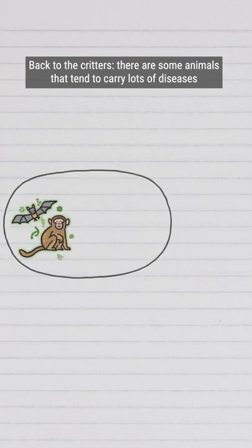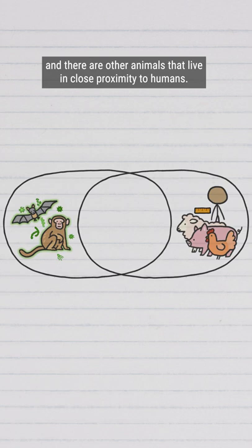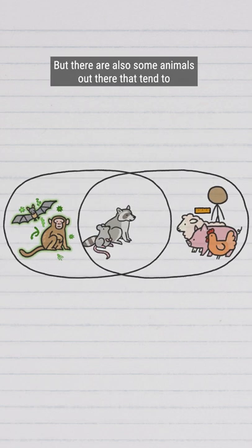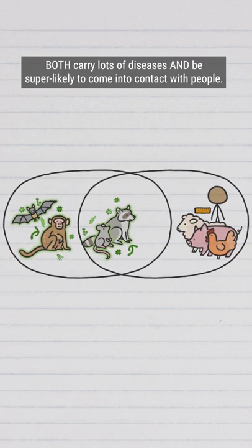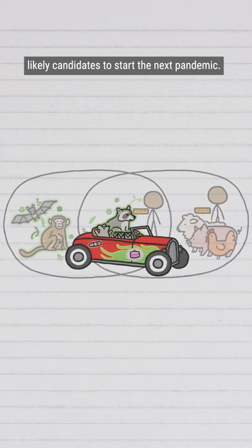Back to the critters. There are some animals that tend to carry lots of diseases, and there are other animals that live in close proximity to humans. But there are also some animals that tend to both carry lots of diseases and be super likely to come into contact with people. That means rodents and small carnivores are especially likely candidates to start the next pandemic.